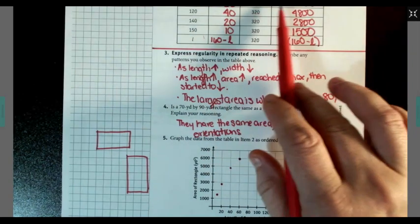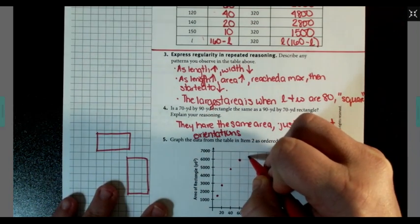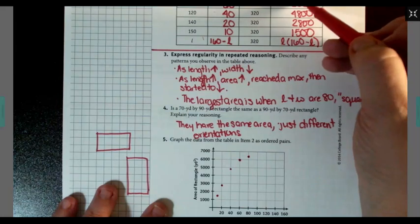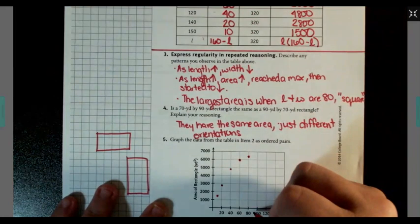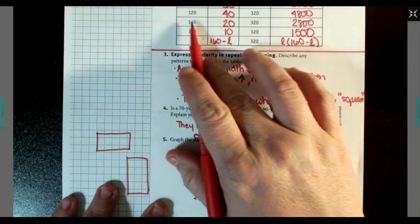Then we have 80, 6400. We have 100, 6000.